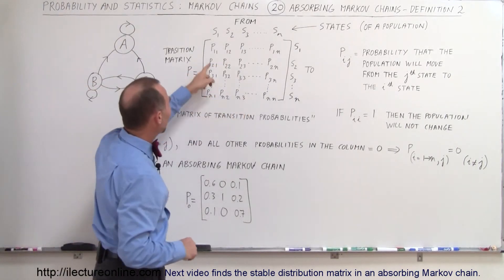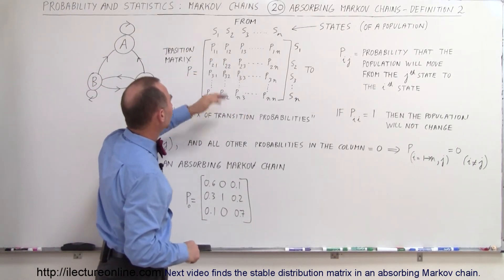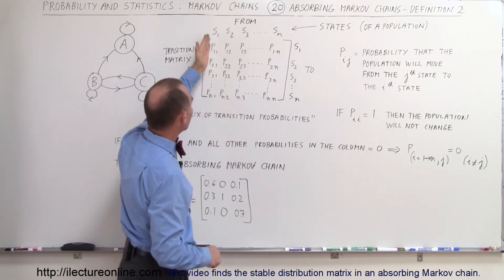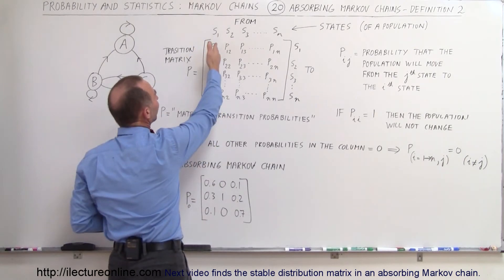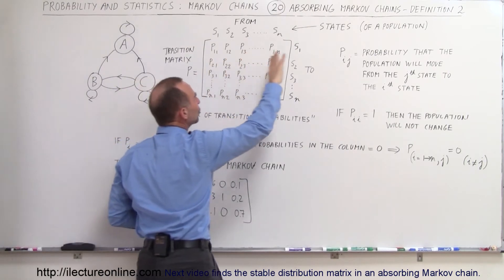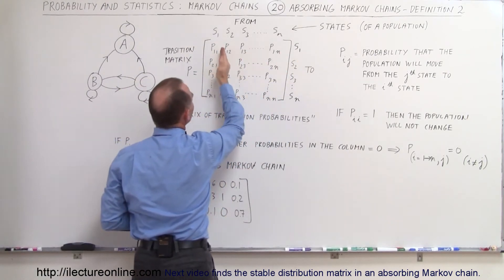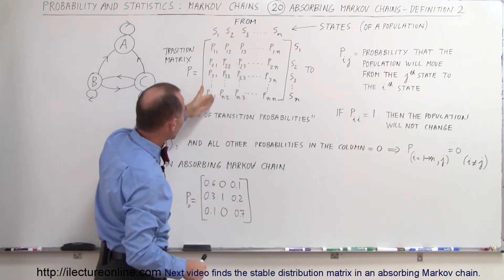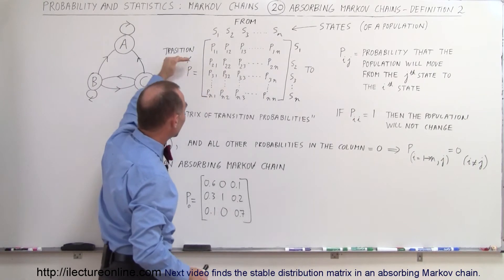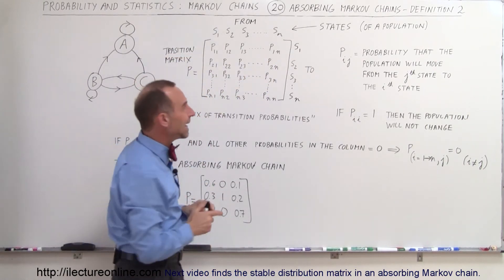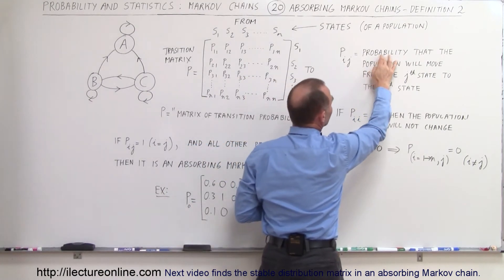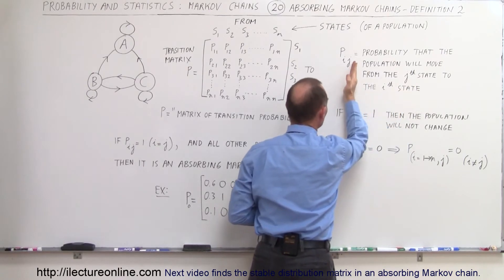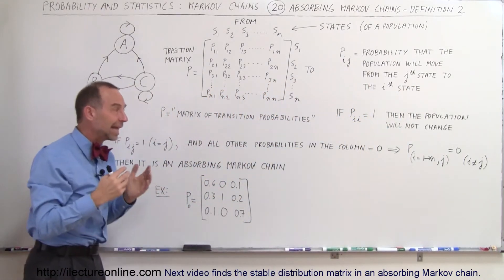Notice that the elements have two subscript indices. The first subscript indicates the state you're going to; the second subscript indicates the state you're coming from — which seems a little backwards. So the second number indicates you're coming from state one, and the first number indicates you're going to state two. Pij indicates the probability that the population will move from the j-th state to the i-th state — from the second number to the first number.